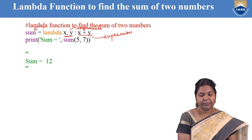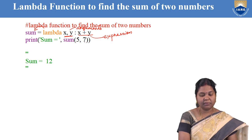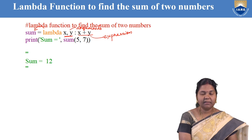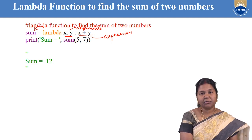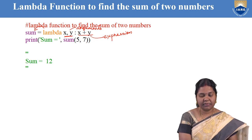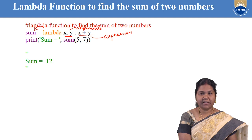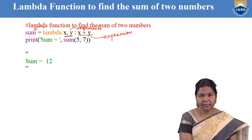That variable is called sum. So when you pass two arguments to the lambda function, it will compute x plus y — that is 5 plus 7 — and the result will be stored in the variable sum. So here lambda x comma y colon x plus y is the way we write a lambda function, where x and y are the arguments and x plus y is the arithmetic expression. The whole function is assigned to a variable.